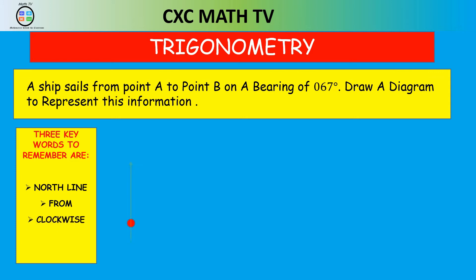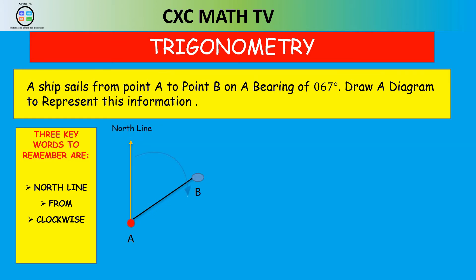We insert the north line from A, and then the next keyword is 'from.' The bearing is always going to be measured from our north line to the next point. The next point is B, and we know that angle is going to be 67 degrees. Notice how we measure the 67 degrees in a clockwise direction.